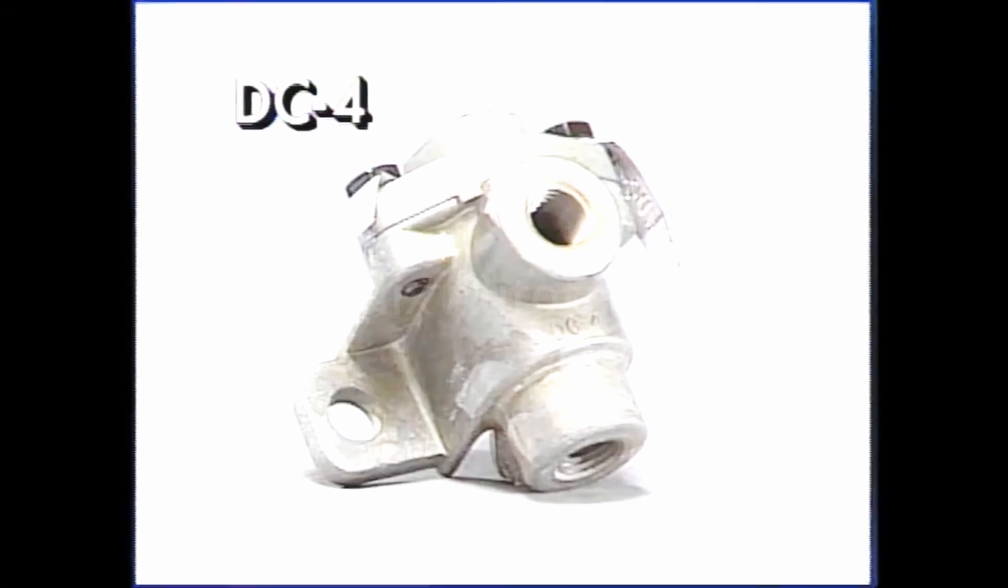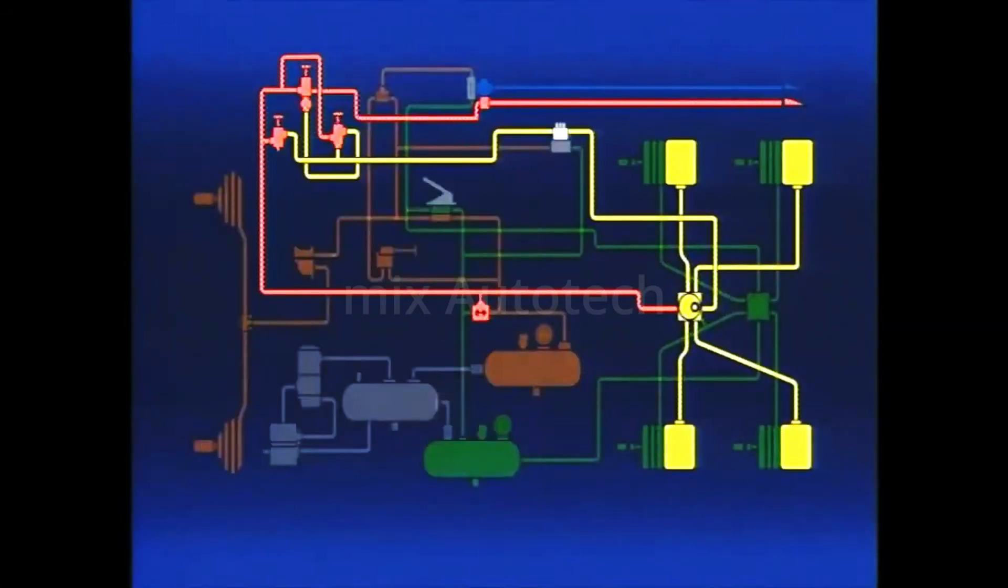A double check valve performs two operations. It directs airflow for specific functions and it selects the higher pressure from either of two sources. Parking brakes, for instance, can be controlled from either the front or rear service reservoirs.